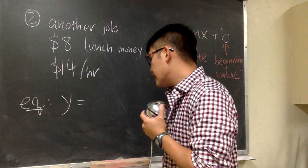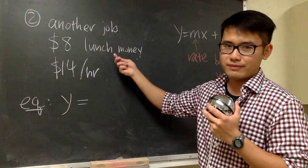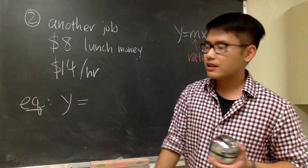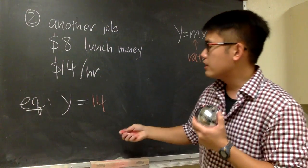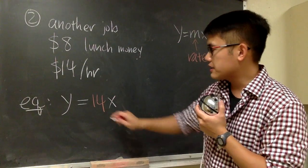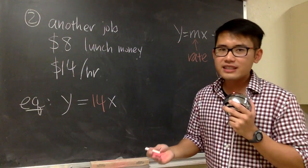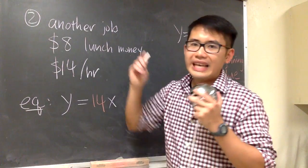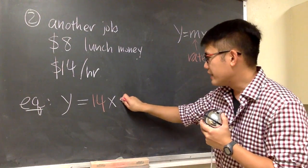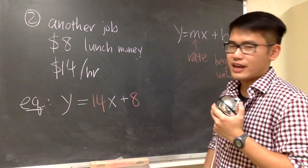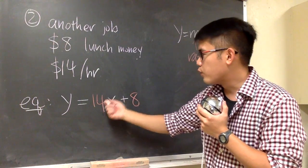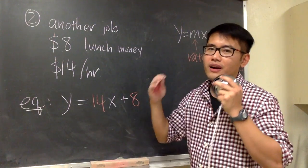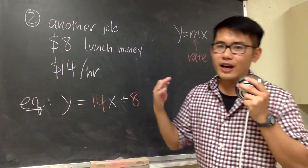So y is equal to mx plus b. We have to figure out the rate and also the beginning value. That's all we need. Y is just the y. And then this is equal to what's the rate? $14 per hour, right? So once again, you see the per something. So the $14 right here is the rate. That's the number in front of the x. Put down $14. In this case, do we also have the b value? Yes, we do. Because right here, you get the $8 right away. So we can add the 8 at the end. This is it. y is equal to 14x plus 8. That's all. The x stands for how many hours you work and then y is how much money you can get paid.